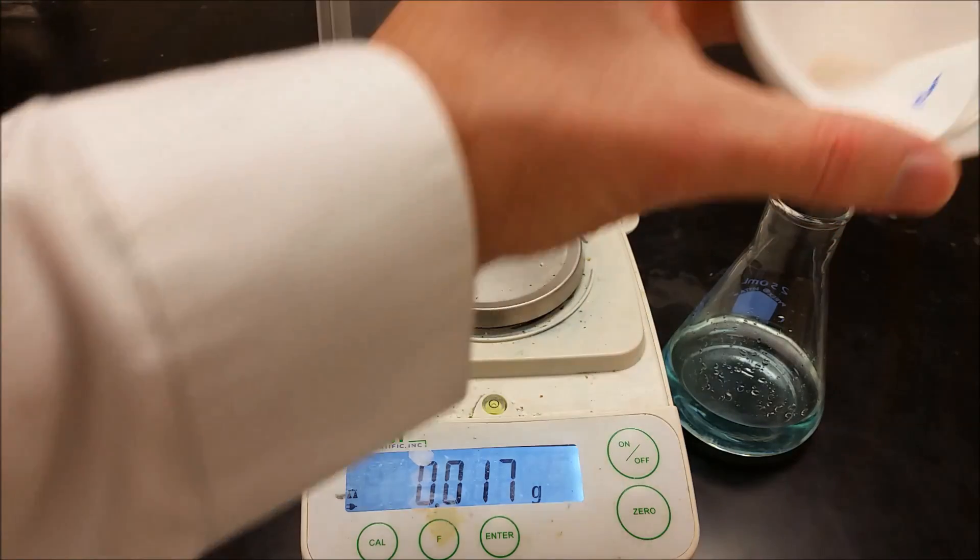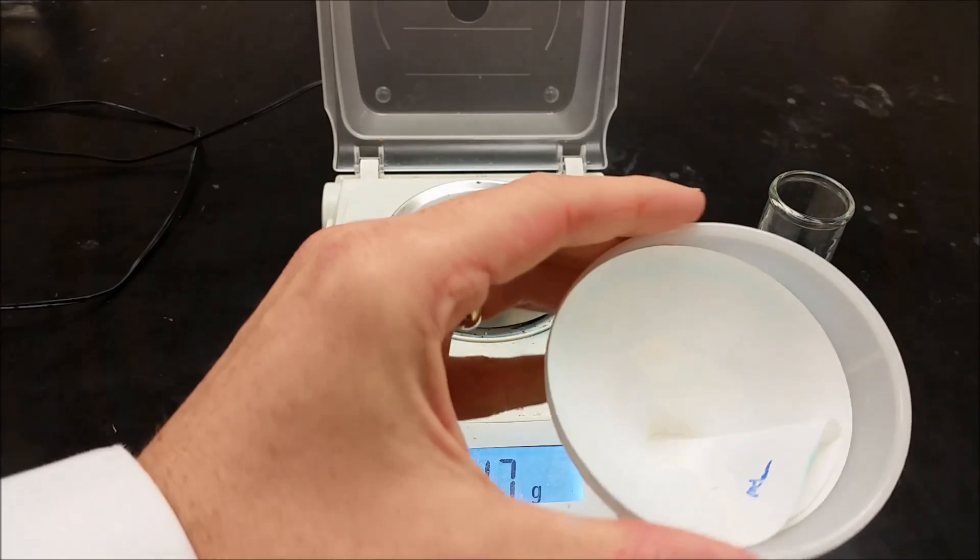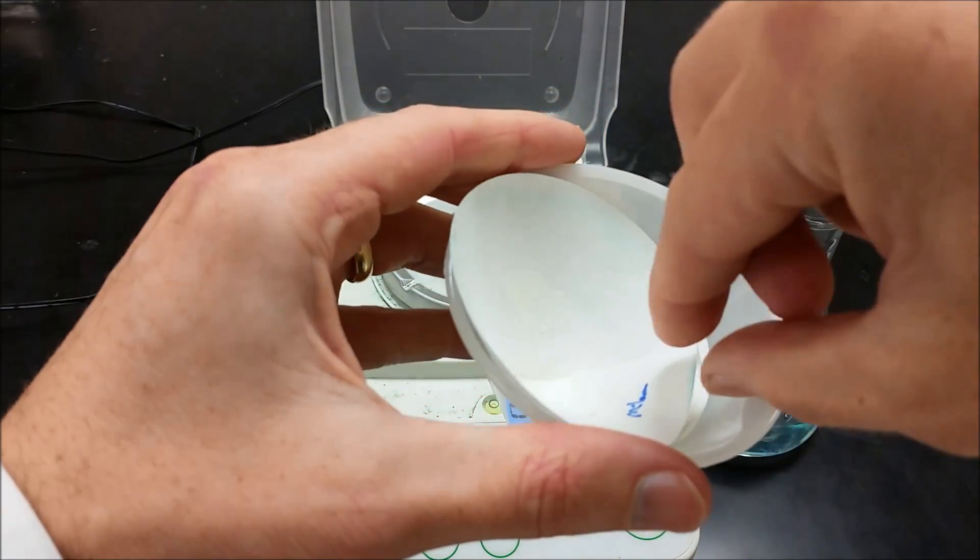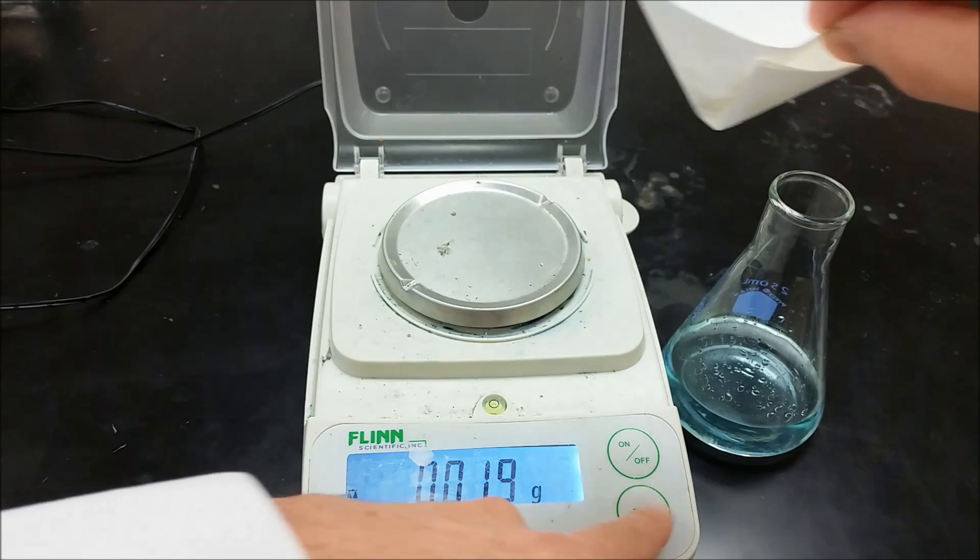So now that we're done and this is dried, we have our white barium sulfate salt. I'm going to take that and get our mass of it.